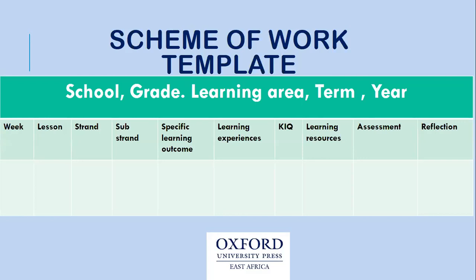A sub-strand may have five specific learning outcomes and you are required to have six lessons. But when you read the specific learning outcomes, some outcomes cannot be planned for individually. Just as I've opened this page on states of matter — outcome D says 'observe safety when working with different materials' and outcome E says 'show curiosity while categorizing different materials.' You cannot plan a lesson for just observing safety or showing curiosity.